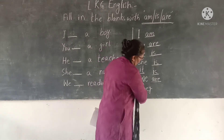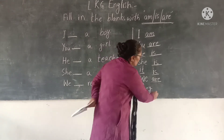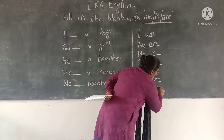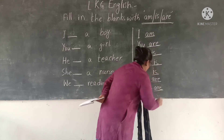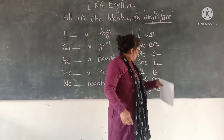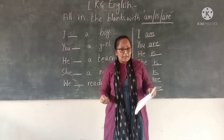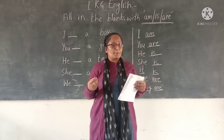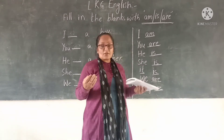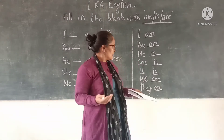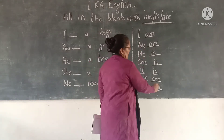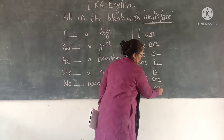They. After they also we use ARE. They are running. They are playing. They are reading. They are friends. We should write ARE after they.